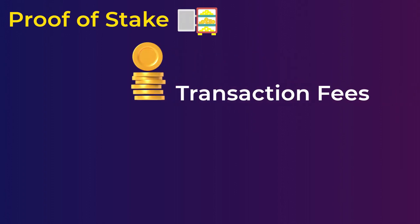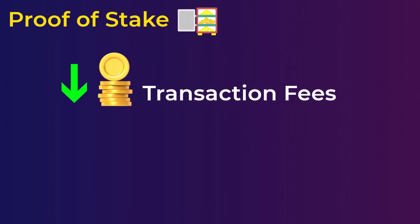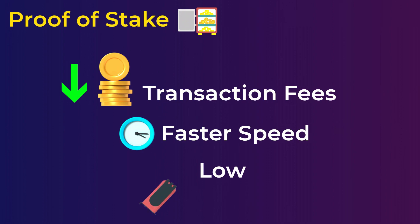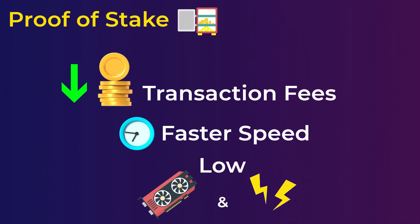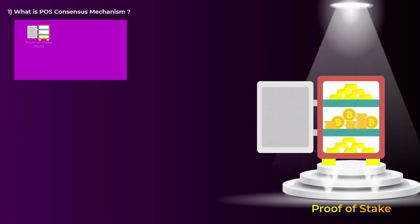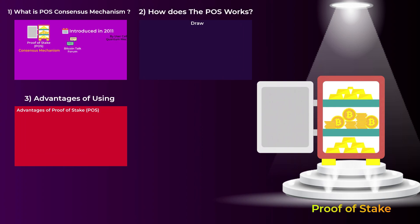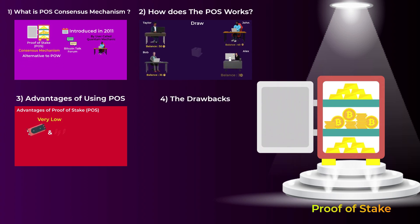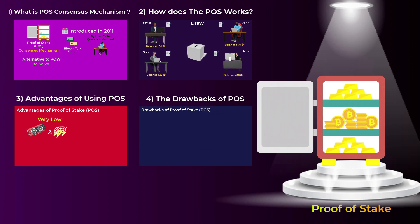The proof of stake, on the other hand, is an alternative to the proof of work, but with much cheaper transactions, faster speeds, and much lower power and energy usage. In this video, you will learn what the proof-of-stake consensus mechanism is, how exactly proof of stake works, what the advantages of using proof of stake are compared to proof of work, and finally, some drawbacks of the proof of stake.